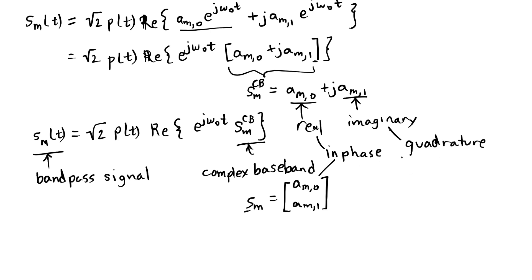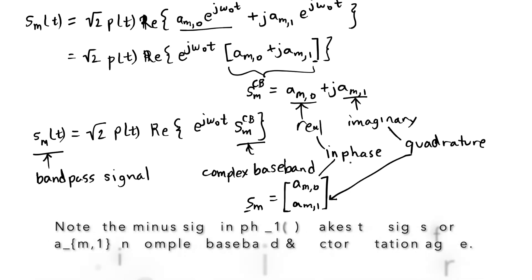These are the same as the a_m,0 and the a_m,1 respectively. It's just another way to look at having a two-dimensional vector. You can think of them as being equivalent. We'll use these terms to kind of name our two dimensions, but you'll also see in other books complex baseband notation used much more extensively than we will in this course.